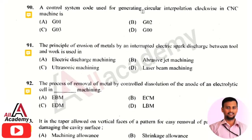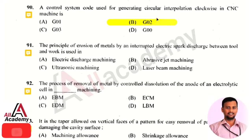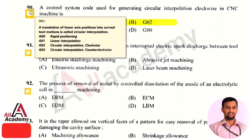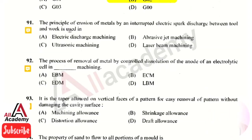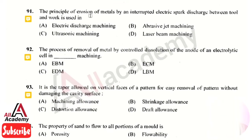The next question: the control system code used for generating circular interpolation clockwise in a CNC machine — the right answer is option 2, that is G02. G02 is used to generate circular interpolation in a clockwise direction. A translation of linear axis positions into curved tool motion is called circular interpolation. G01 is used for linear interpolation, G02 for clockwise circular interpolation, and G03 for counterclockwise direction.